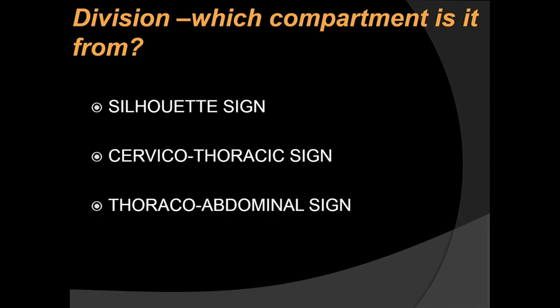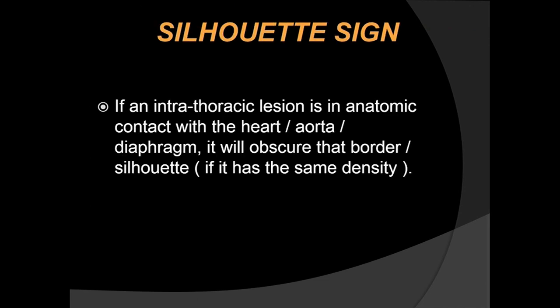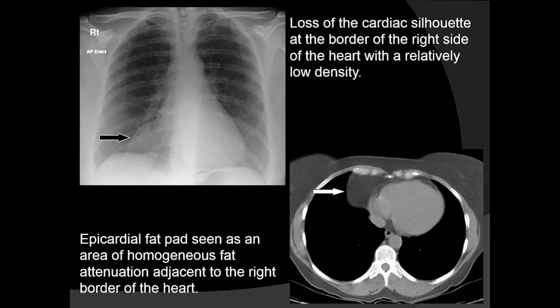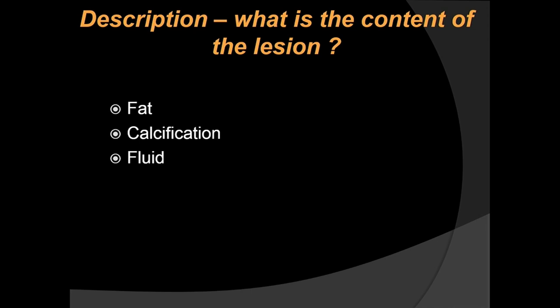On the radiograph, to differentiate into which compartment a lesion lies, we use the silhouette sign, the cervicothoracic sign, and the thoracoabdominal sign. The silhouette sign states that if an intrathoracic lesion is in anatomic contact with the heart, aorta, or diaphragm and has the same density, it will obscure that border. This is demonstrated here: there is loss of the right cardiac silhouette, and the CT scan showed a prominent epicardial fat pad on the right side.